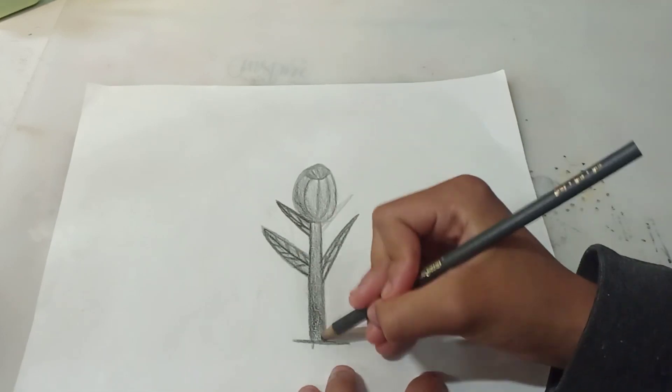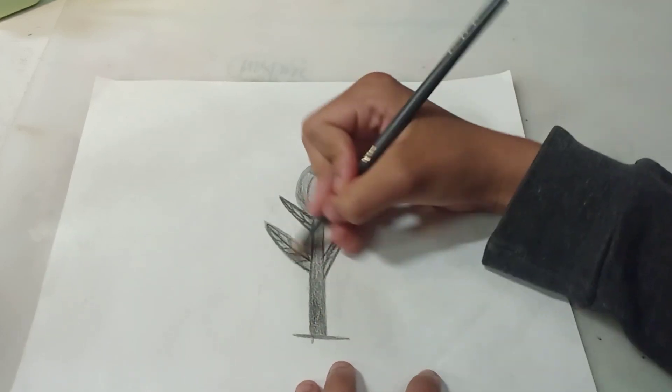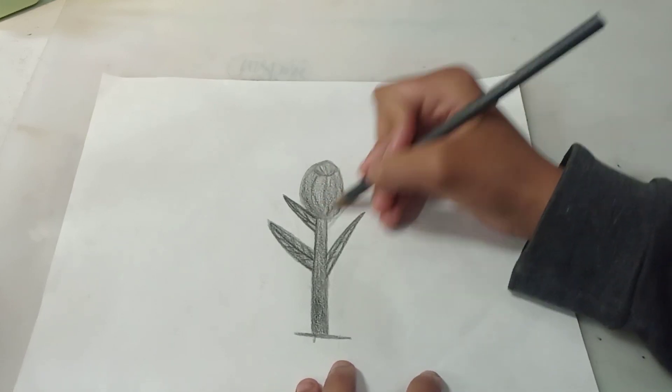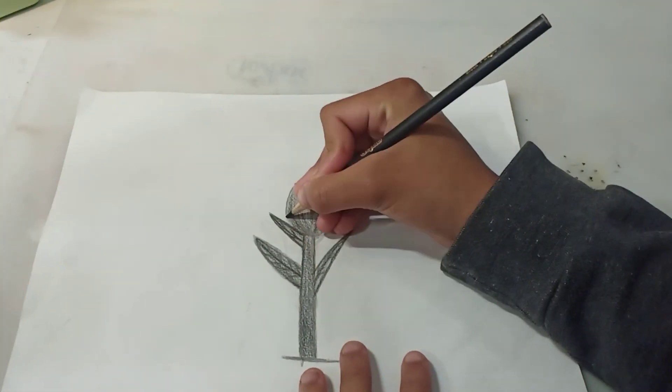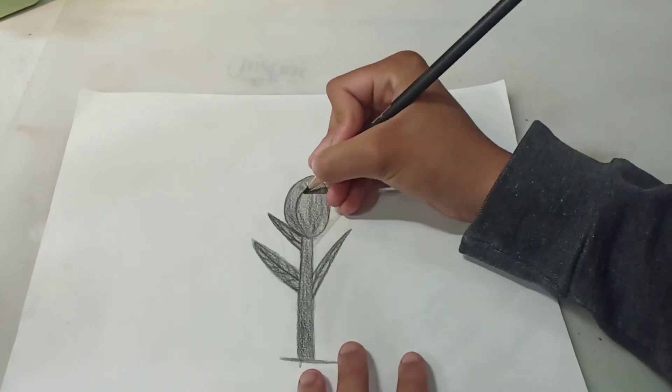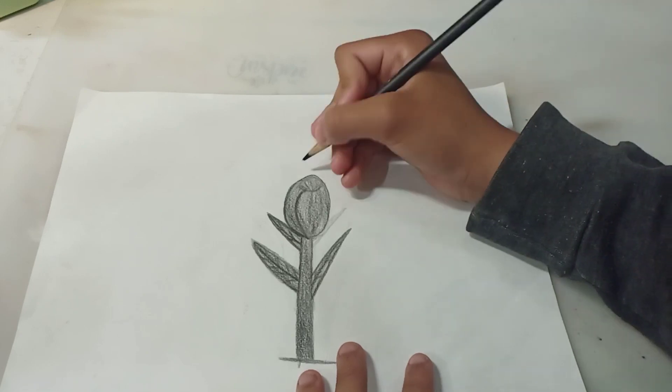But I like doing lighter colors first and then darker colors over top of it. Or do a dark color and blend it with a lighter color. And this is a pencil I probably should start out with so I can overlap it. And now back to my dark pencil to go over it.